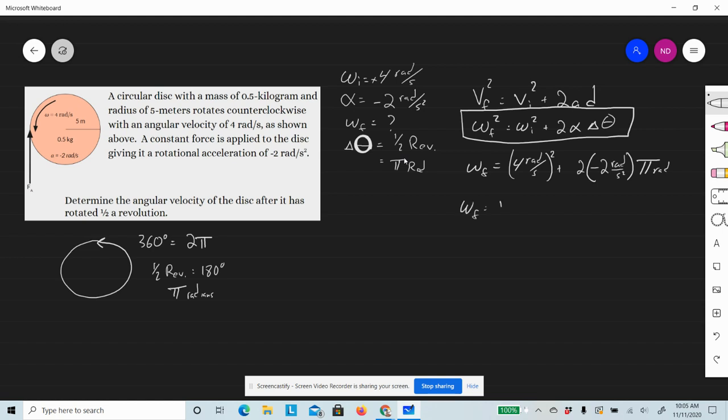Omega final squared equals 16 radians squared per second squared—this is squared, by the way—plus negative 4 radians squared per second squared times π. Omega final squared equals 4 times π.